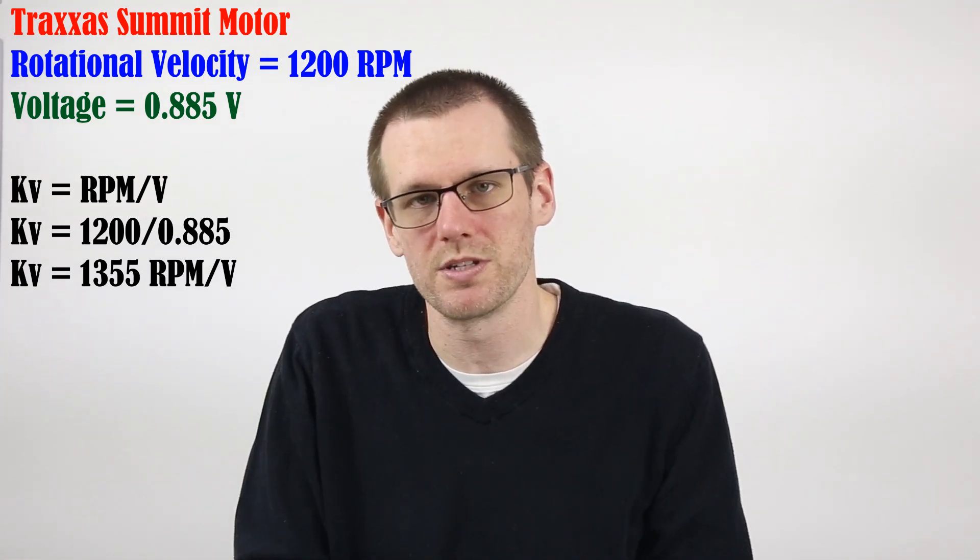Once you have the RPM, this one spun at about 1200 RPM. From there, I take the RPM 1200 and I divide it by our voltage of 0.88 thereabouts that we got, and I get the KV value. So I'm going to do that here on a calculator very quickly, and we get a KV of about 1360 for this specific motor.